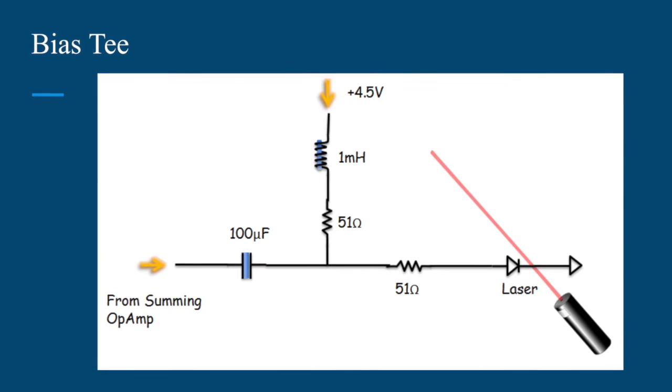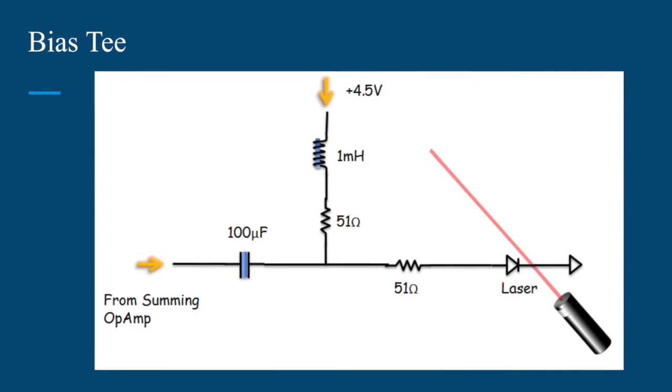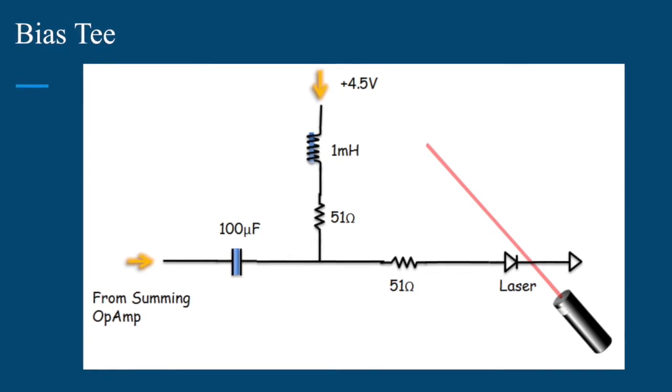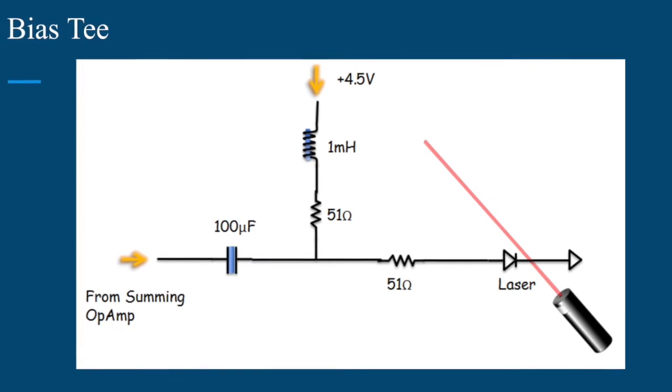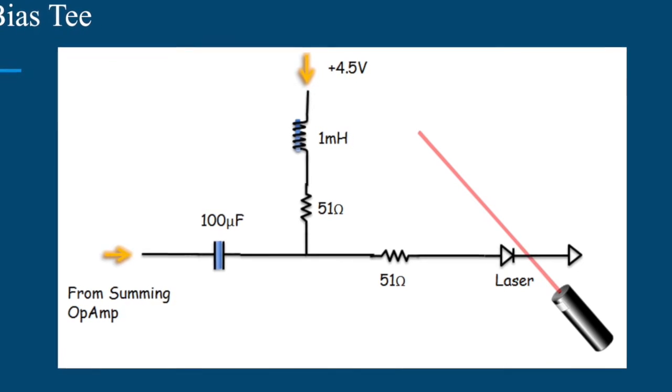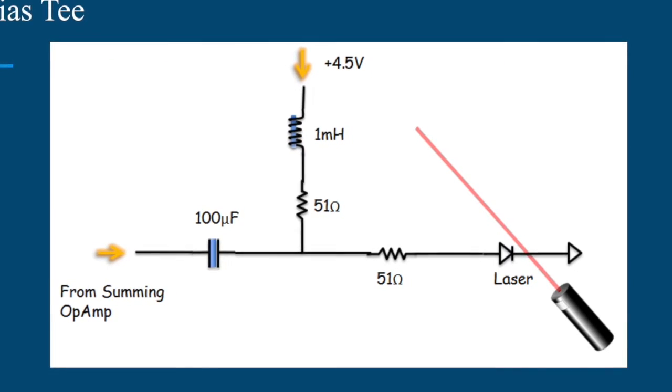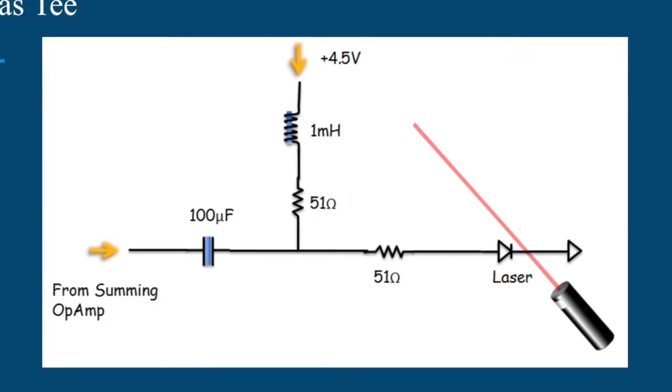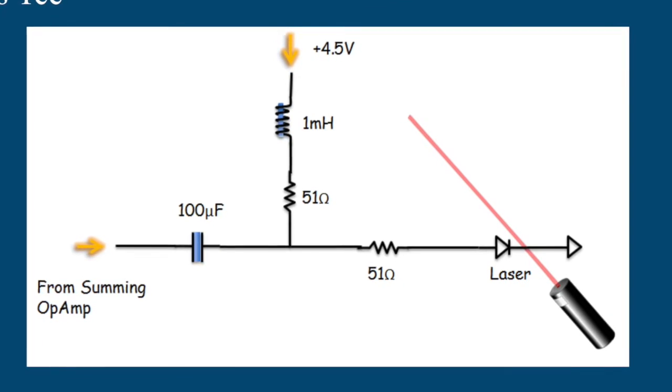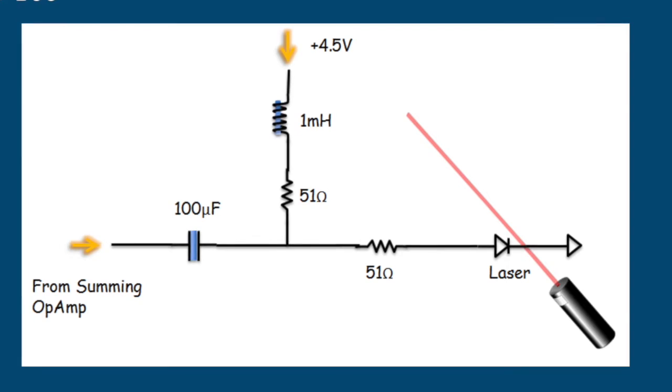This is the schematic for the bias T configuration in our transmitting circuit. The laser needs to be supplied voltage but we don't want the AC and DC currents to interfere with each other. The capacitor blocks the DC signal and the inductor likewise blocks the AC signal so they don't interfere with each other. The 51 ohm resistor just ensures that there's not too much current running into our laser.